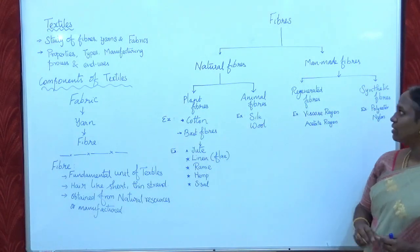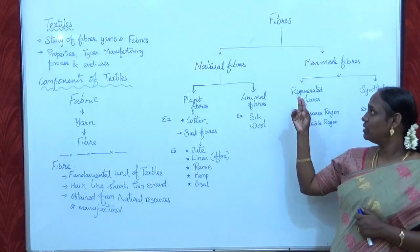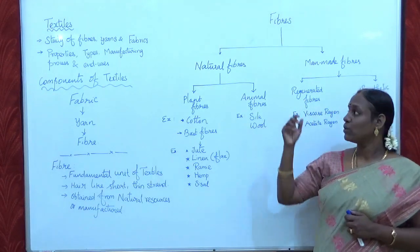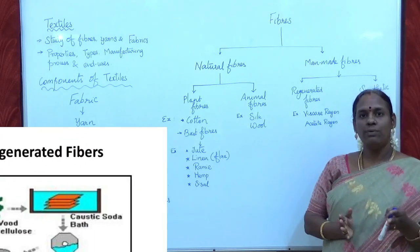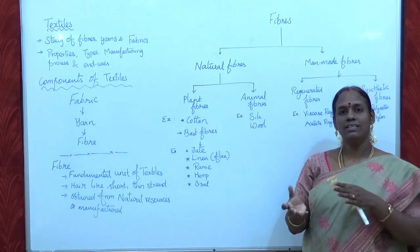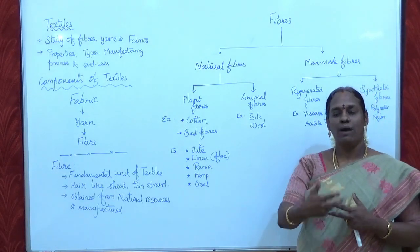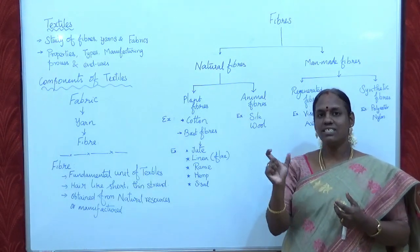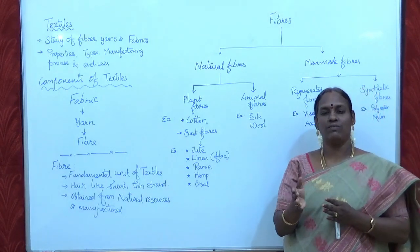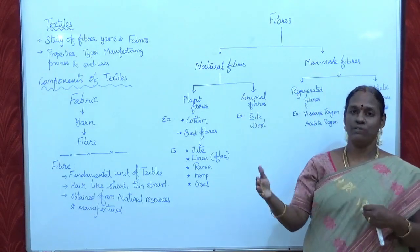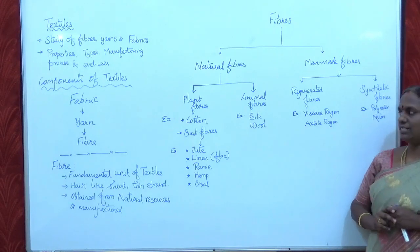Now we are going to see about man-made fibres. Man-made fibres are manufactured by various chemical processes and are broadly classified into two types: regenerated fibres and synthetic fibres. In case of regenerated fibres, the raw materials are wood pulp and some chemicals. The fibres are manufactured in filament form — that is, a long continuous strand. Examples of regenerated fibres are viscose rayon and acetate rayon.